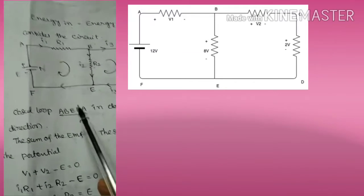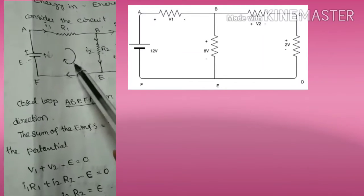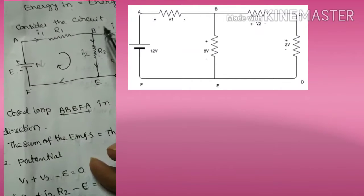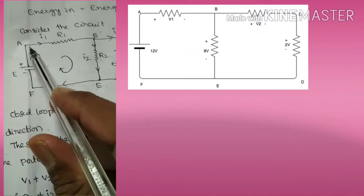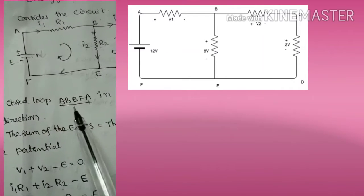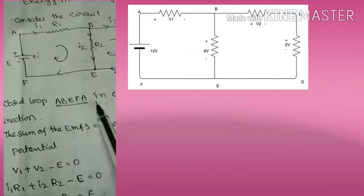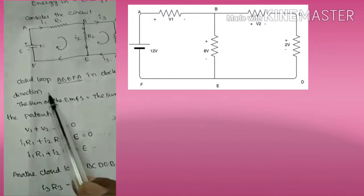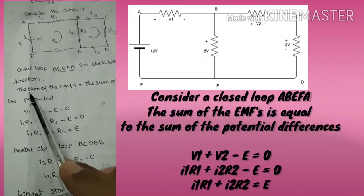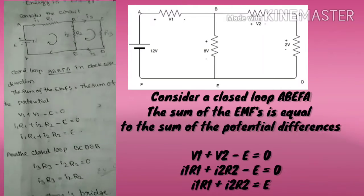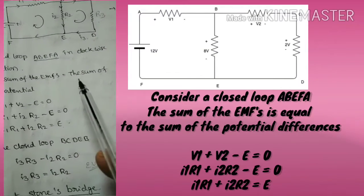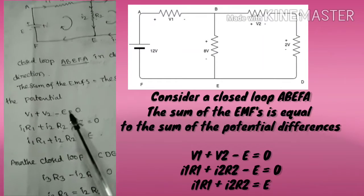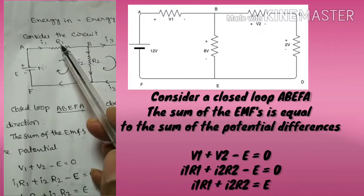Observing the first loop: a-b-e-f-a. Starting and ending at point a, we traverse this closed loop in the clockwise direction. The KVL formula gives us the sum of the EMFs equal to the sum of the potential differences in this loop.